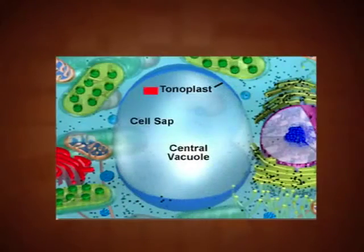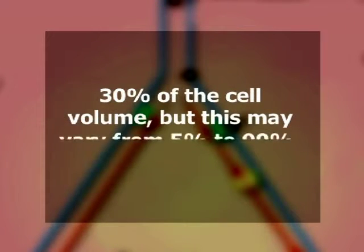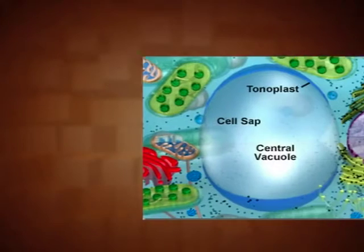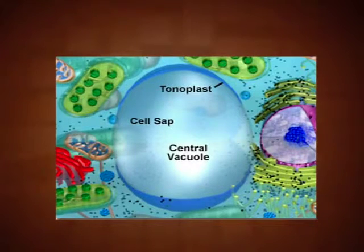When it comes to vacuole structure, it is designed to complement its function. Many mature plant cells usually have a single large vacuole, though there may be several in a single cell, each separated from the cytoplasm by a single unit membrane called the tonoplast. The tonoplast is a very active and dynamic membrane. Generally, vacuoles occupy more than 30% of the cell volume, but this may vary from 5% to 90% depending on the cell type. The central hollow region of the vacuole contains a fluid known as cell sap.